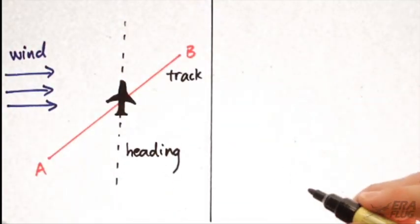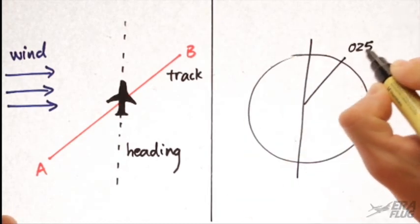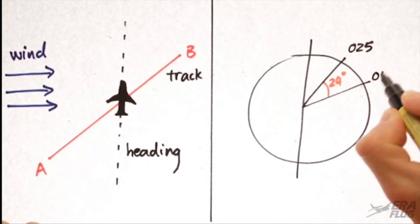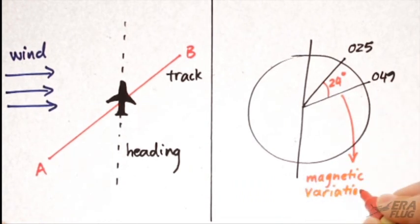Secondly, remember to convert true track, which is measured on a map, to a magnetic track by applying magnetic variation.